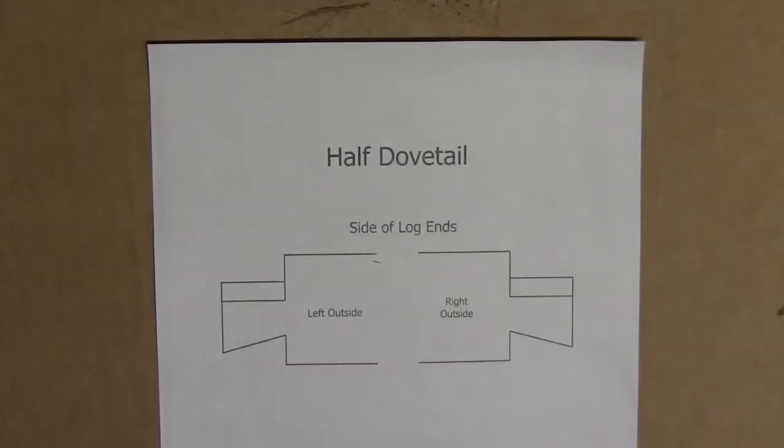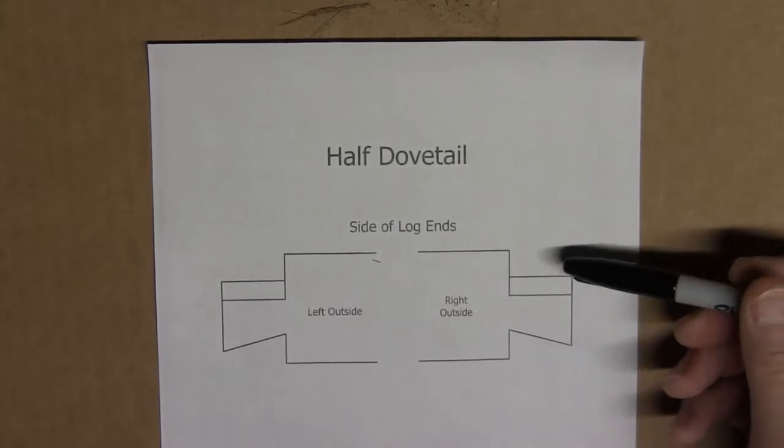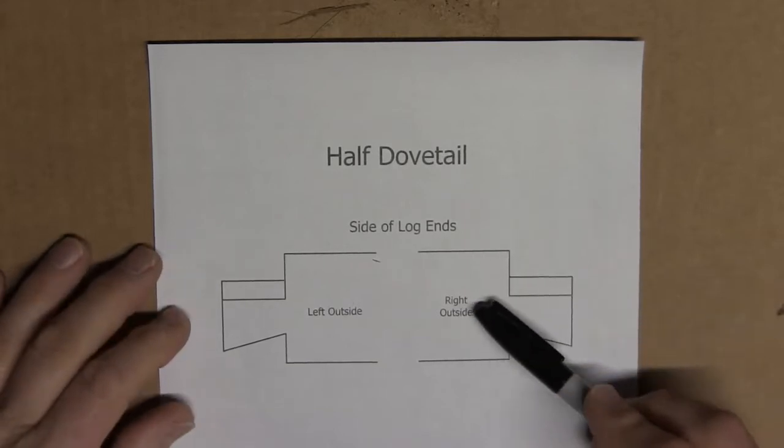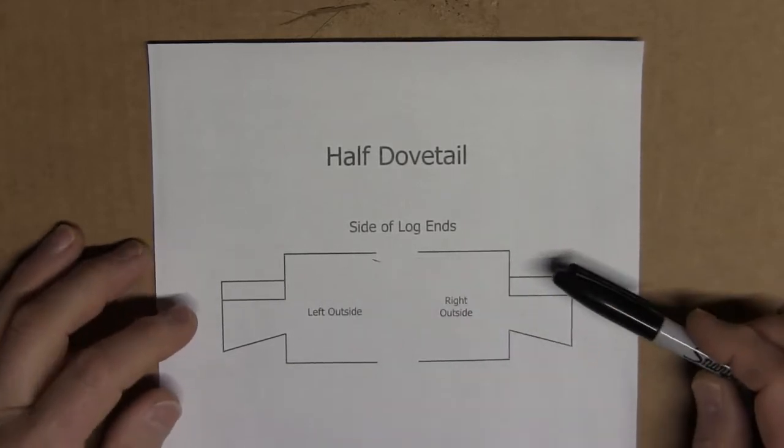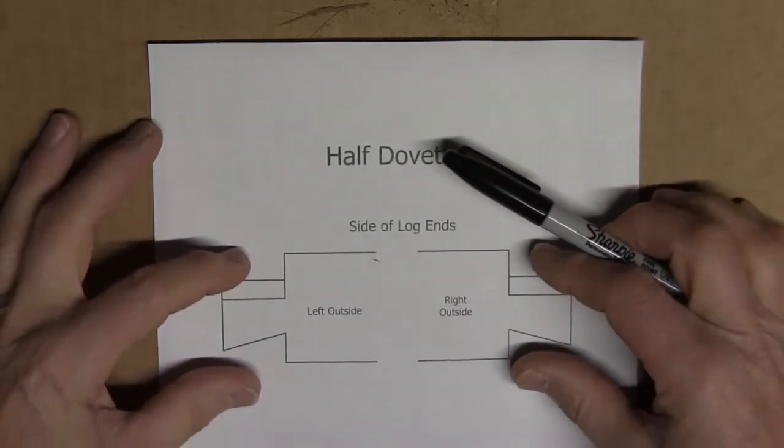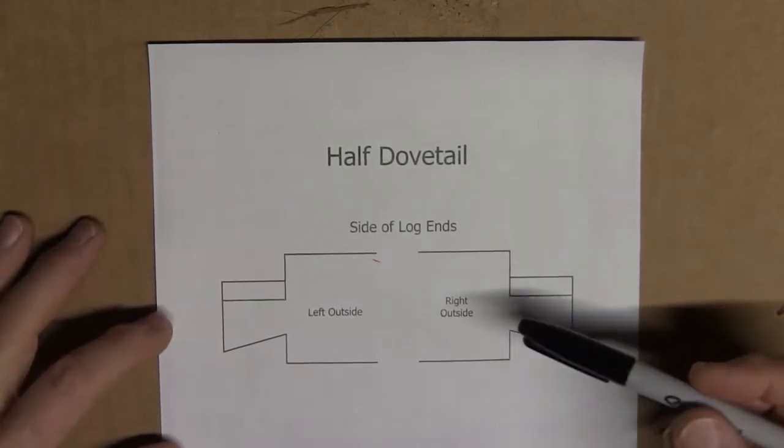I'm going to go over the math and the scribing and marking for the half dovetail notch. This is the half dovetail notch to start with. These are the ends of the logs and they have a tongue sticking out from the end. That is the half dovetail notch.